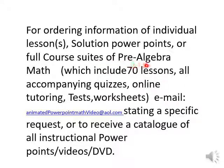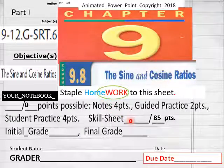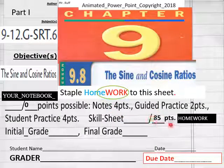Hello everybody, we're getting ready to do lesson 9.8 part one homework for pre-algebra math. For today's homework lesson you got 85 points. Students, put your name, date, and put your period here, due date here.